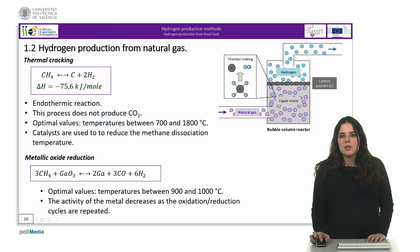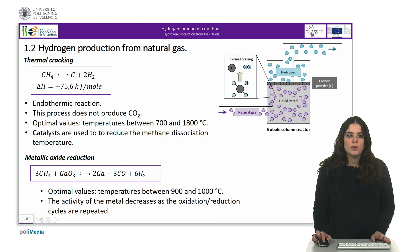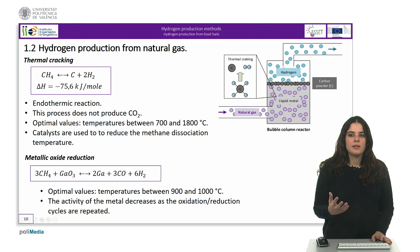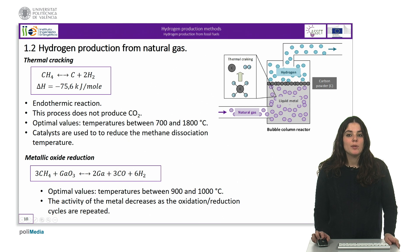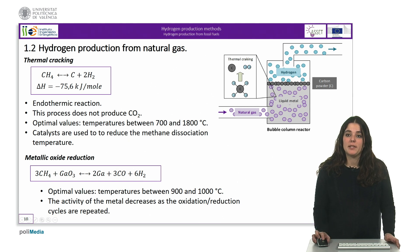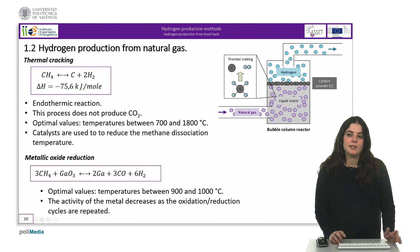The last process we will talk about is metallic oxide reduction, where gallium oxide is reduced to metal using methane at temperatures between 900 and 1000 degrees Celsius. The problem with this reaction is that the activity of the metal decreases as the oxidation-reduction cycles are repeated.